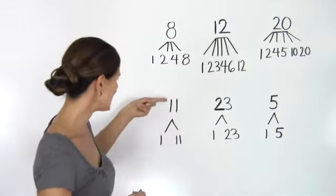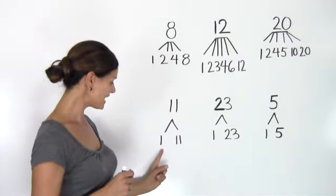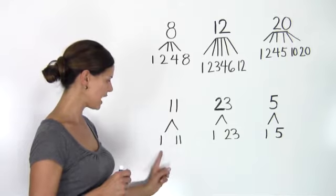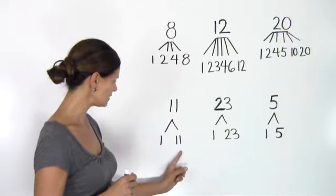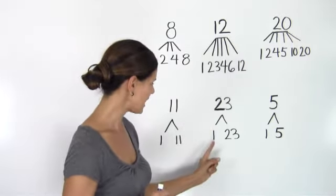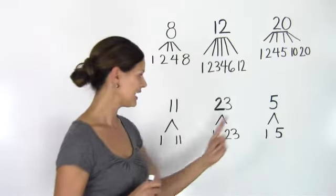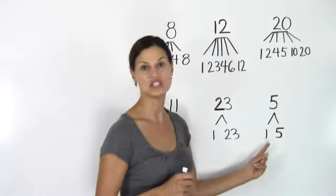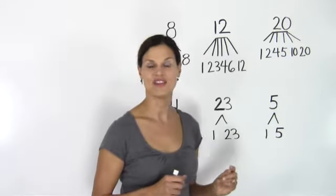So let's look at a few examples here. 11 is a prime number because it only has two factors: 1 and 11. These are the only two numbers that divide evenly into 11. 23 also has only two factors, 1 and 23. And 5 is another number with only two factors, the number 1 and the number 5 itself.